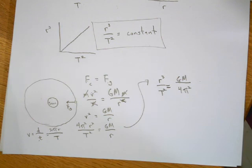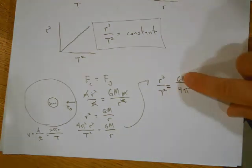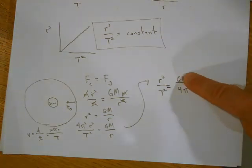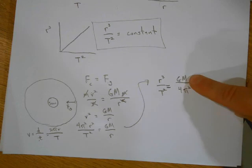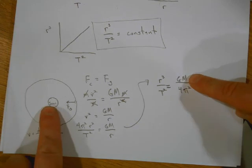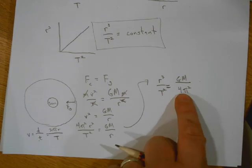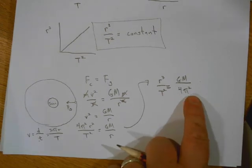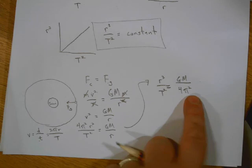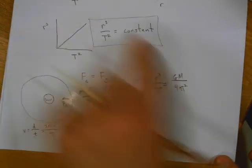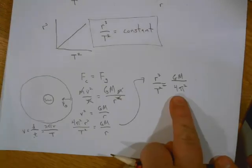That's why it's a constant. The reason it's a constant is that for anything orbiting in my system, well G is always the same because it's the universal gravity constant 6.67 times 10 to the minus 11. M is the thing that it's orbiting around, well everything's going to orbit around the same thing, in this case it's the sun. Four, well four is always four, and π is always π.